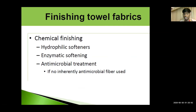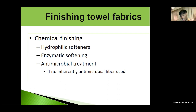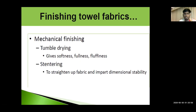Chemical finishing is very important for hygiene purposes and the towel's finishing. This includes enzymatic softening and antimicrobial treatment, if not using an inherently antimicrobial fiber. The fabric goes through large tanks — I will show at the end of this video how it is happening. For mechanical finishing, tumble drying gives softness, fullness, and fluffiness.